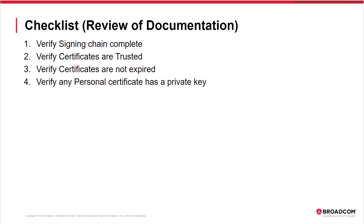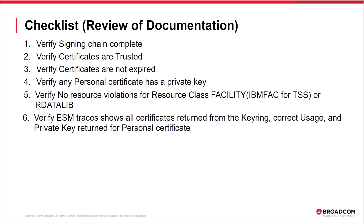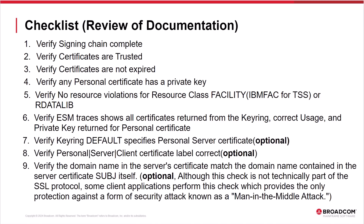The documentation can be reviewed by checking the following items which can cause an SSL connection failure. For items one to four, the CHECKCERT and LIST CHAIN commands will provide information to verify that the signing chain is complete, the certificates are trusted, the certificates are not expired, and that any personal certificate has a private key. For item five, the ESM resource security report will provide details for any resource violations for resource classes FACILITY and R_datalib related to the access of a key ring or access to a personal certificate's private key. For item six, the ESM security trace will provide details to verify that the expected key ring is being returned, all certificates in the key ring are connected with the proper usage, and the private key is being returned for any personal certificate. Items seven, eight, and nine are optional requirements dependent on the SSL application.